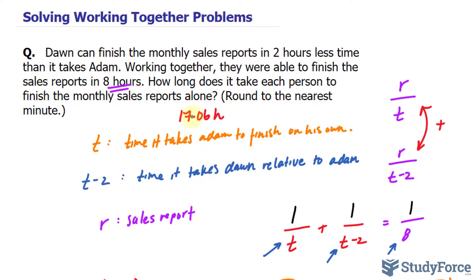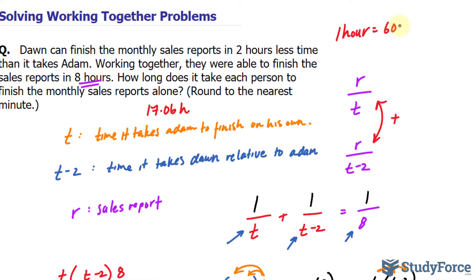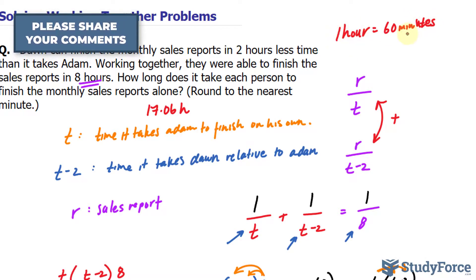How do I make 0.06 in minutes? Well remember, one hour is equal to sixty minutes. So all we have to do technically is convert 0.06 using this conversion ratio.